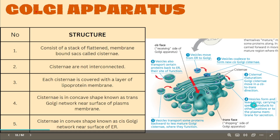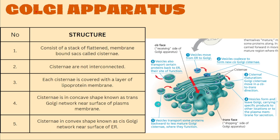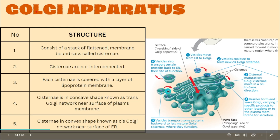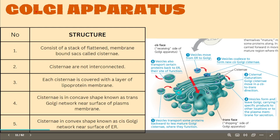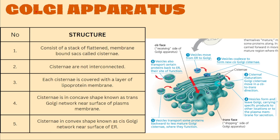Once proteins enter the cis face, there are three pathways. First, they can go to a less mature part of the Golgi apparatus. Second, they can be transported to another location — proteins needed by other organelles or even the extracellular location. Third, vesicles can transport proteins to another Golgi apparatus, perhaps if the protein is still immature. Or the protein can go back to the ER, where it may be required for a certain function.